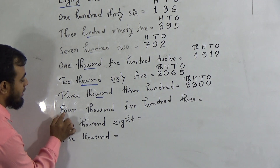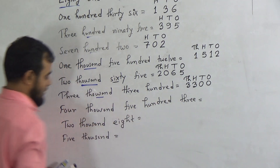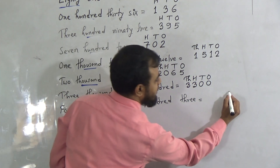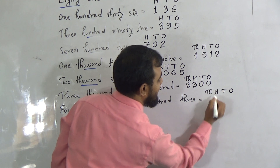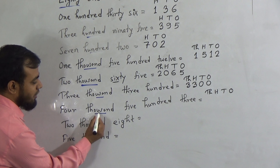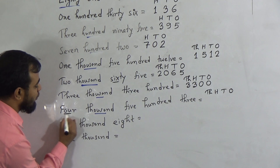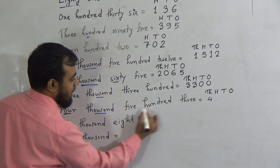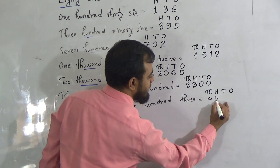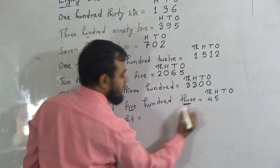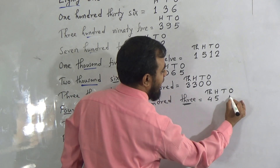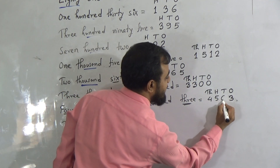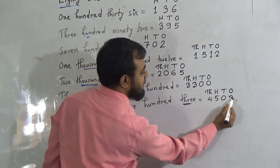The next number is 4503. Our highest place value is 1000 here, so we should take up to the 1000s place. It is 1s, 10s, 100s, and 1000s. To write down 4000, we must write down 4 in the 1000s place. To write down 500, we must write down 5 in the 100s place. And to write down 3, we must write down 3 in the 1s place. The 10s place will be filled up with the digit 0. This makes the full number 4503.